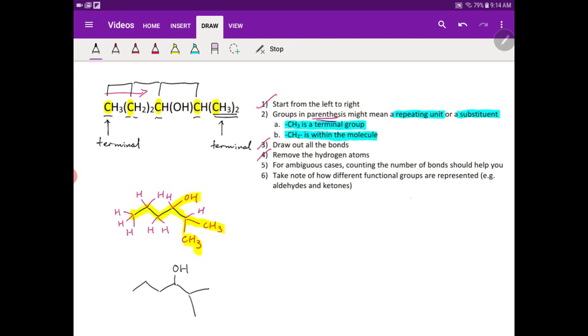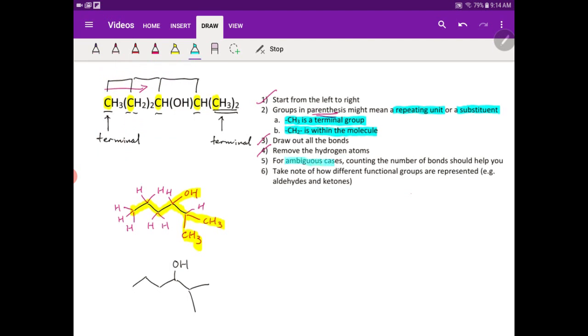Before I end off this video, I have two other points that I want to point out. The first point that I want to talk about is about the ambiguous cases that you might see sometimes. This time around, we actually have this OH group - it is very clear from this condensed formula that it is a substituent one.